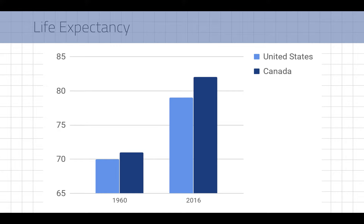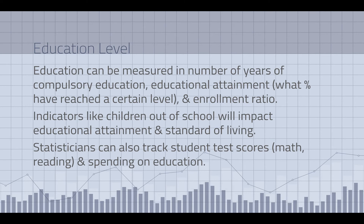Obviously people are living longer than they used to. But the gap between Canada and the US has grown — instead of living just one year more than Americans as in 1960, Canadians now live about three and a half years more. This can be due to income distribution, health care, and healthier lifestyles. Actually, US life expectancy has gone down in the last few years, which is a shocking and weird trend — it's the opposite of what we should be going for as a society.